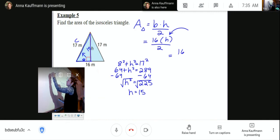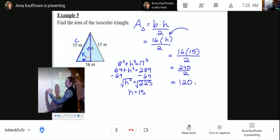So then we've got 16 times 15 divided by 2. So 16 times 15 is 240 divided by 2, and 240 divided by 2 is 120, and this is an area, so 120 meters squared.